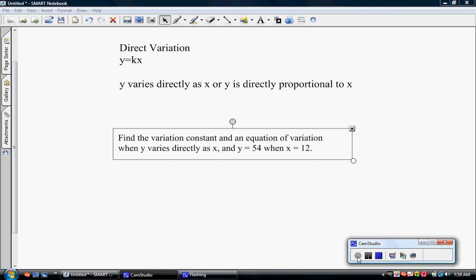In this section, we focus on two types of what we call variation – direct variation and indirect or inverse variation. First we'll talk about direct variation.